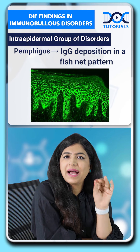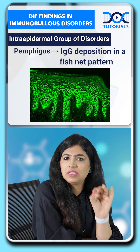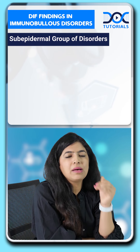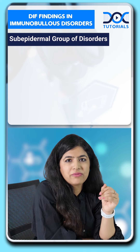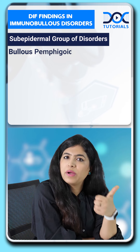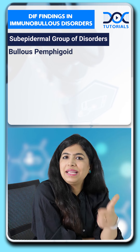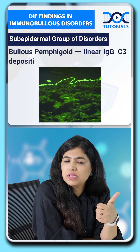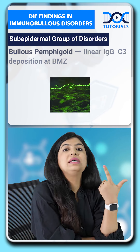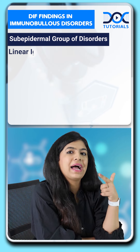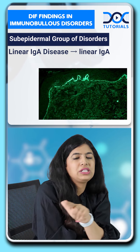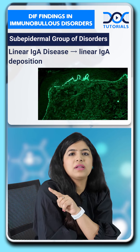Now coming to the subepidermal group of disorders. In bullous pemphigoid, we get linear IgG and C3 deposition at the basement membrane zone. In linear IgA disease, we get linear IgA deposition at the dermo-epidermal junction.